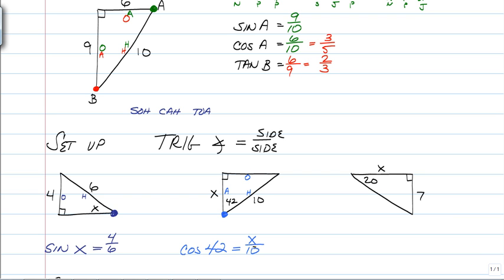So now you get to try setting up the last one. Go ahead and give it a try. And if you said tangent of 20 is equal to 7 over X, you are good to go. Because we're standing on 20. This is the opposite. This is the adjacent. The only one that uses O and A is the T, which is tangent. And then the ratio is opposite over adjacent. And you're good to go.